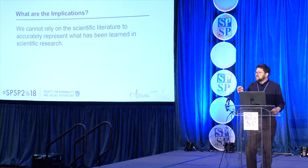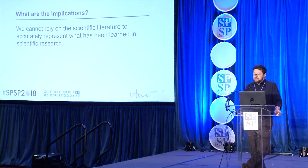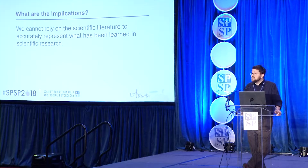Why is this a problem? I'll state this in the most provocative way I can: we cannot rely on the scientific literature to accurately represent what has been learned in scientific research. Even if the work conducted in individual labs is systematic and bias-free, the filters we use at the publication stage are not systematic and bias-free. As a result, publication bias creates a situation where we don't know what we think we know, and don't know what we don't know.